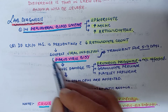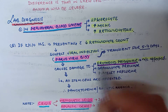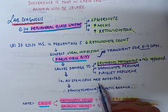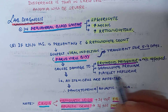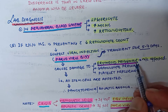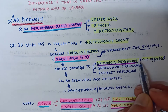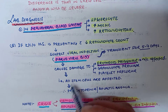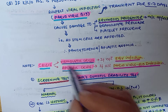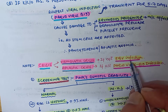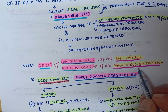The most common viral infection to suspect is parvovirus B19. Parvovirus B19 is transient for five to seven days and causes damage to erythroid progenitor cells, granulocyte precursors, and platelet precursors — with erythroid progenitor cells being most commonly affected. This results in pancytopenia or aplastic anemia. Hemolytic crisis occurs with Epstein-Barr virus infection, while aplastic crisis occurs with parvovirus B19 infection.